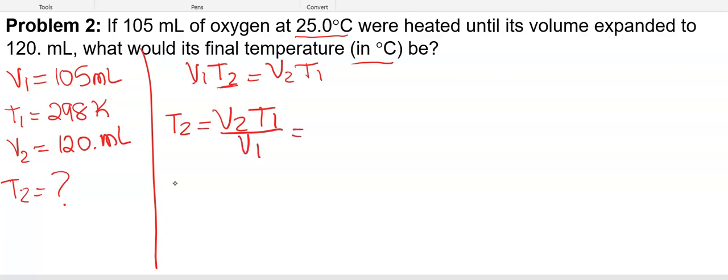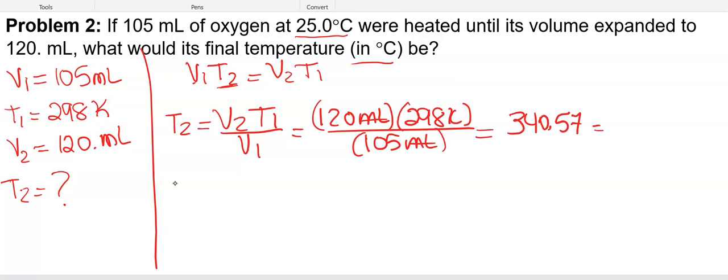Plugging in numbers. So our V2 is 120 mils. Our T1 is 298. And our V1 is 105. Canceling units. So now when I plug this into my calculator, I get 120 times 298 divided by 105, I get 340.57. And then looking at my units, it looks like I've got three sig figs. So we're going to make that 341 Kelvin.